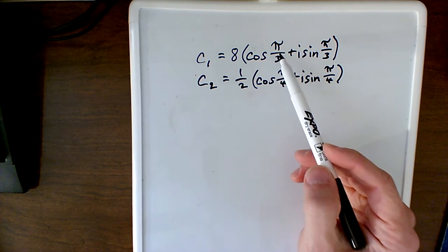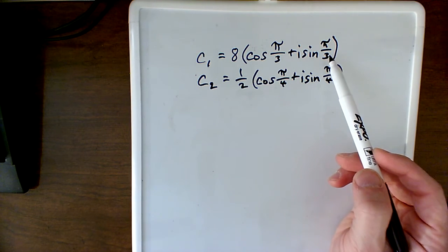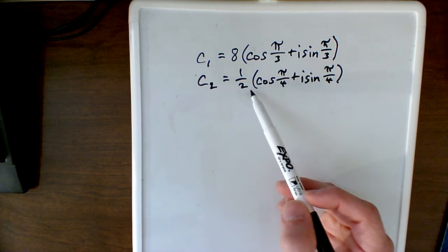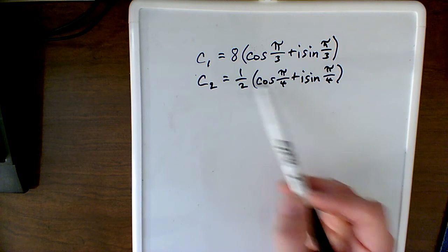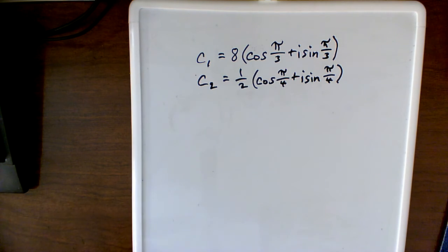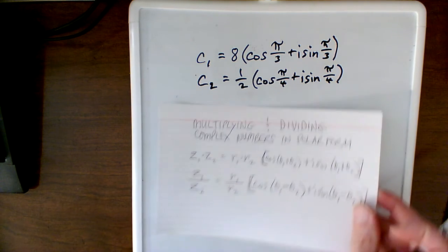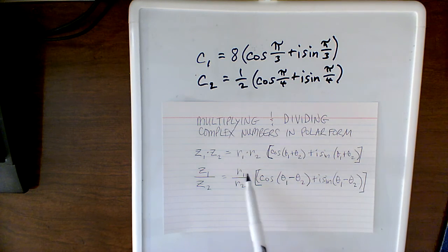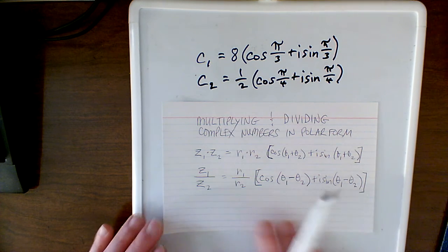The form is going to look like this where you've got an r times a cosine plus an i sine. So here we go, cosine pi over 3 plus i sine pi over 3, and the second number has different numbers, one-half, and then a pi over 4 and a pi over 4. So let's go back to our formula which says when I want to solve this and multiply these two together.